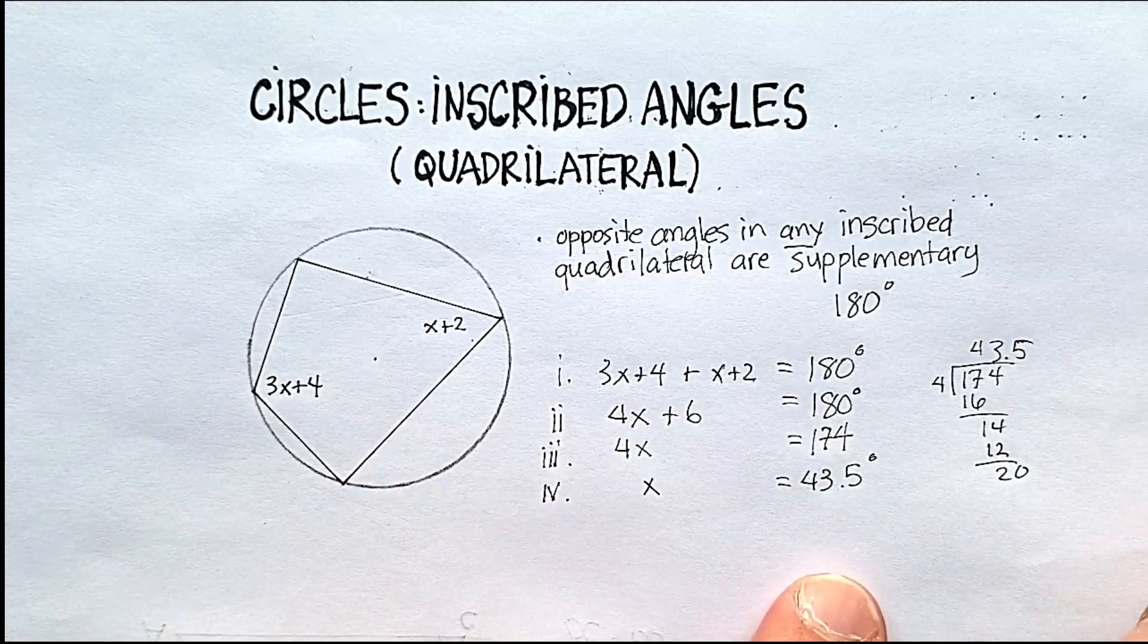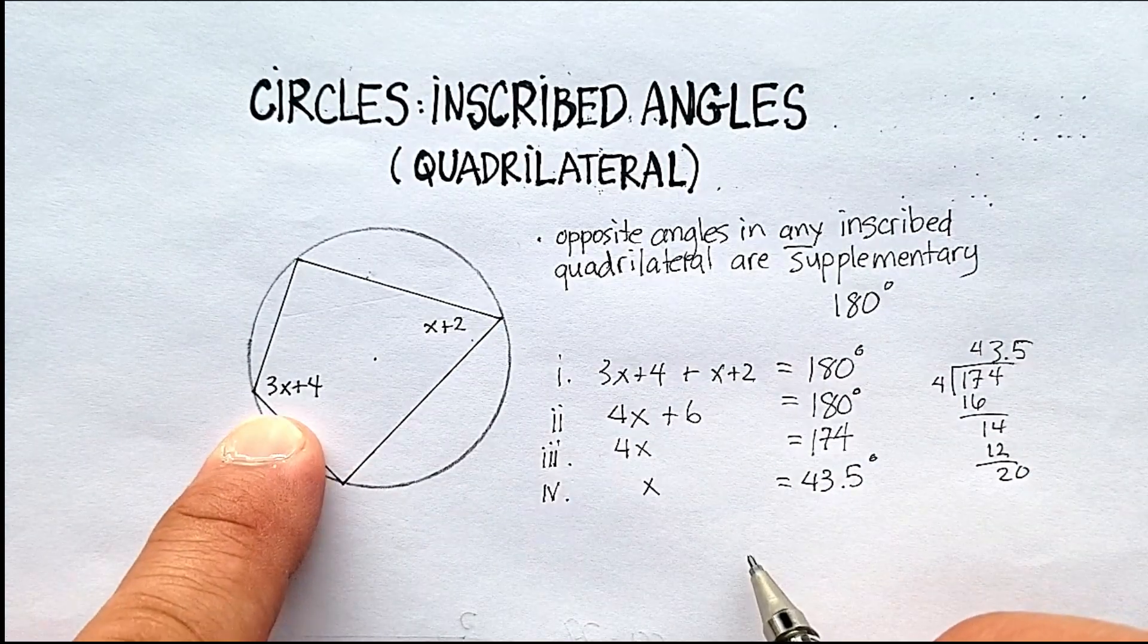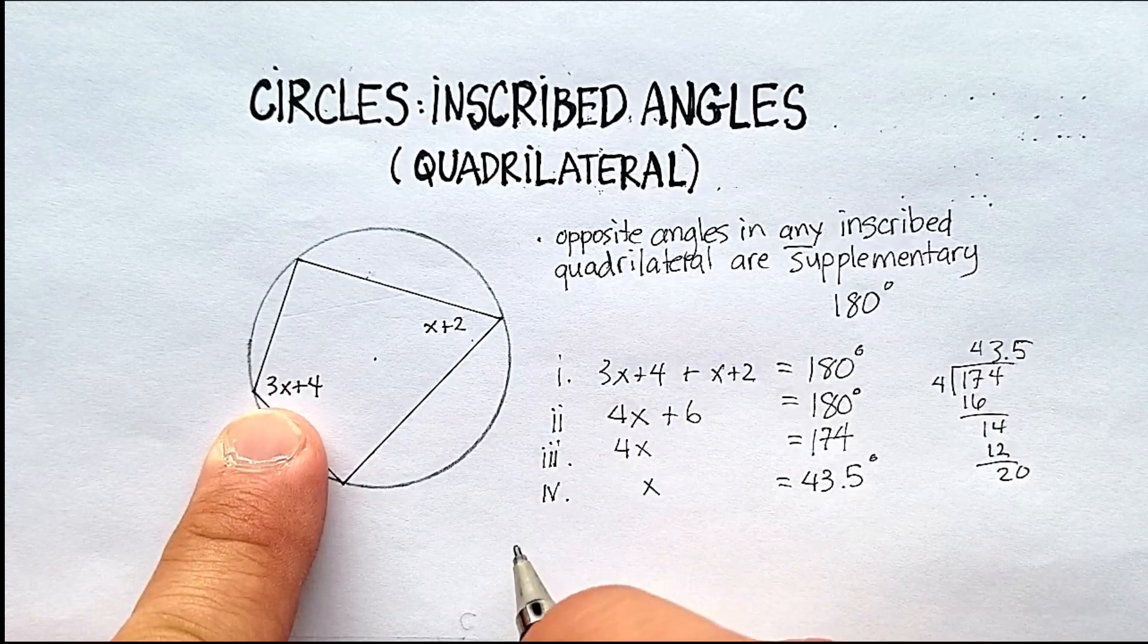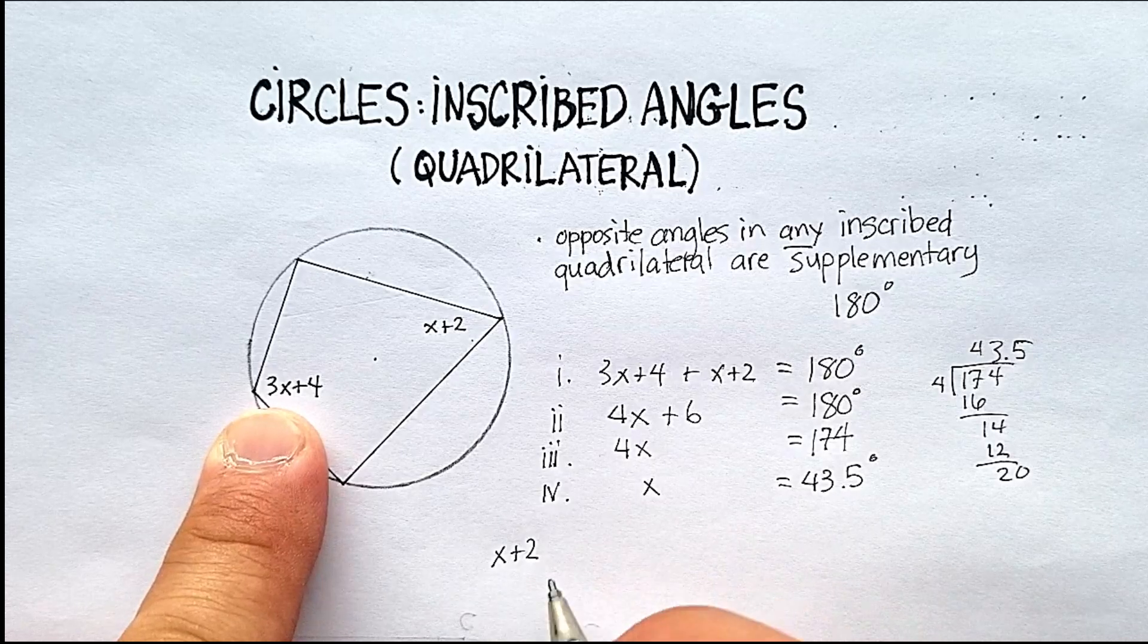I was hoping for an even number, but that's actually not so bad. So I go ahead and plug 43.5 back into my numbers here. So x plus 2 turns out to be